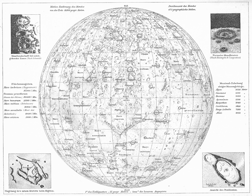Names for all planetary features include a descriptor term, with the exception of two feature types. For craters, the descriptor term is implicit. Some features named on IAU and Triton do not carry a descriptor term because they are ephemeral. In general, the naming convention for a feature type remains the same regardless of its size. Exceptions to this rule are valleys and craters on Mars and Venus; naming conventions for these features differ according to size.